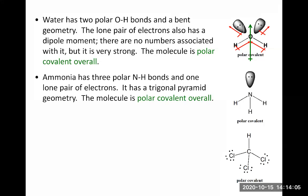Ammonia (NH3) has three polar N–H bonds, so we draw dipole moments along those bonds oriented from the hydrogens toward nitrogen. Ammonia also has a lone pair, contributing a small dipole moment going outward from nitrogen. The molecular geometry is trigonal pyramidal. All the dipole arrows add up pointing upward, giving ammonia a net dipole going from between the hydrogens up toward the nitrogen. Ammonia is polar covalent overall.